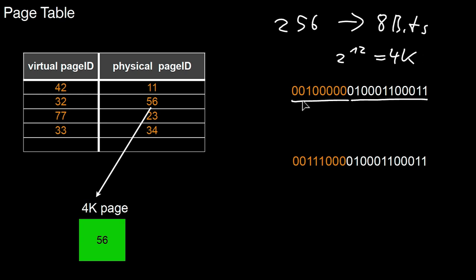So a memory address that looks like that has as its prefix, the orange part. That is a logical page ID, which happens to be 32 in this example. Only this bit is set to 1. The suffix here is the address within that page.